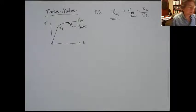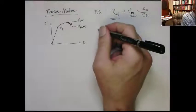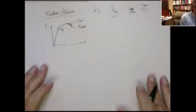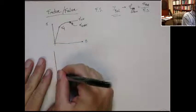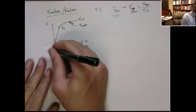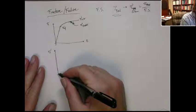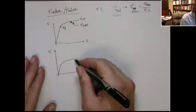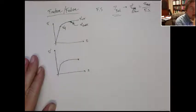We can talk about yield and ultimately fracture as failure criteria. Now we also have some other types of phenomena. Let's look at two materials. For those who have taken materials science, you'll appreciate this. Let's take one material — maybe something like this — that has a lot of plasticity to it. Let's imagine that's a steel.